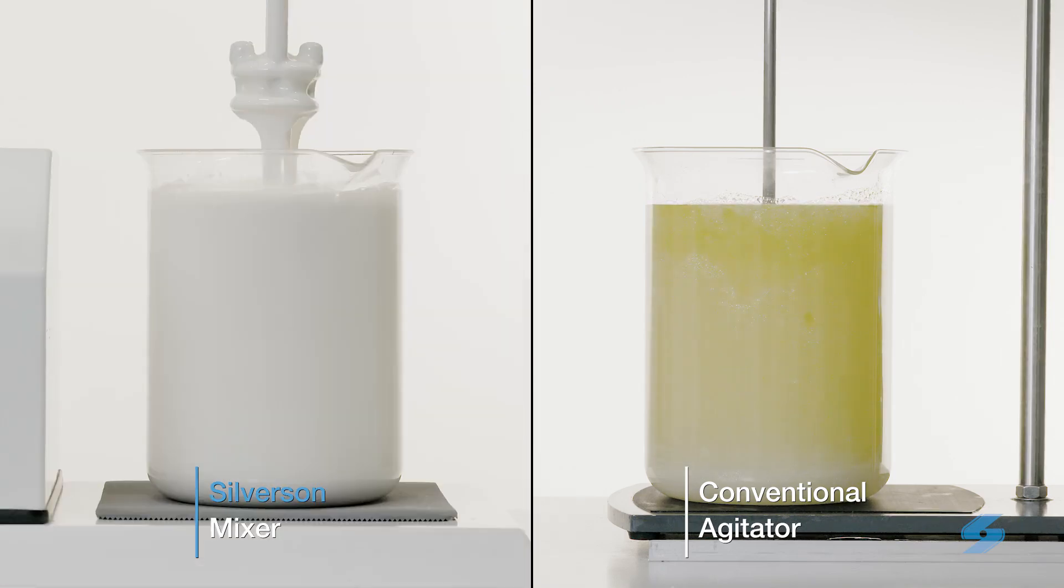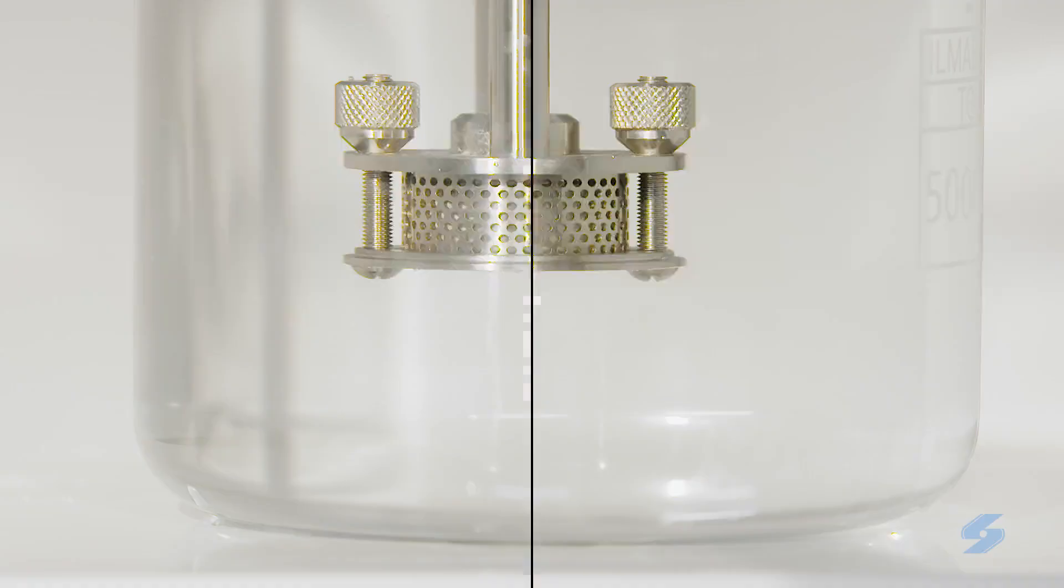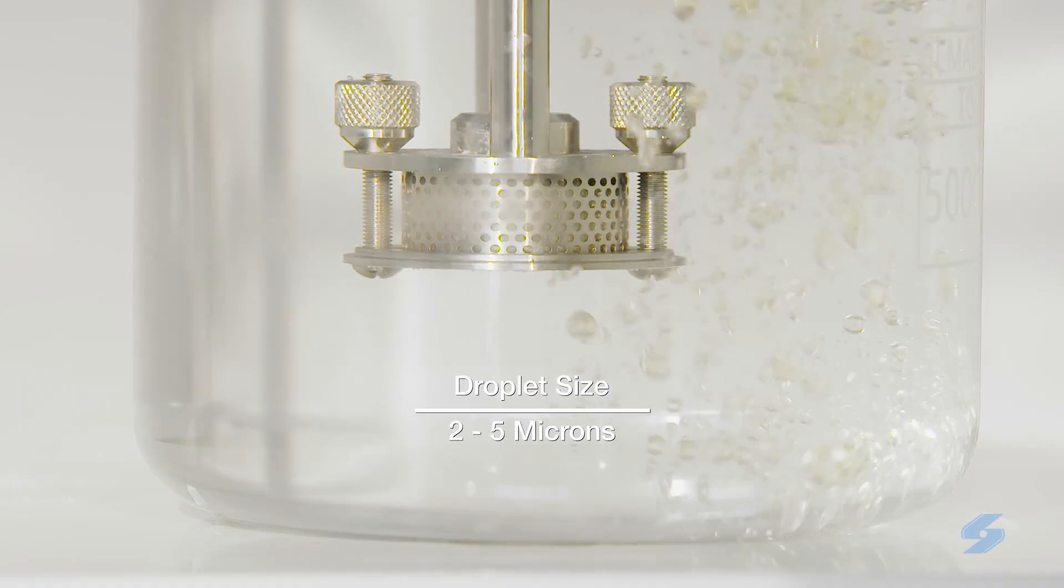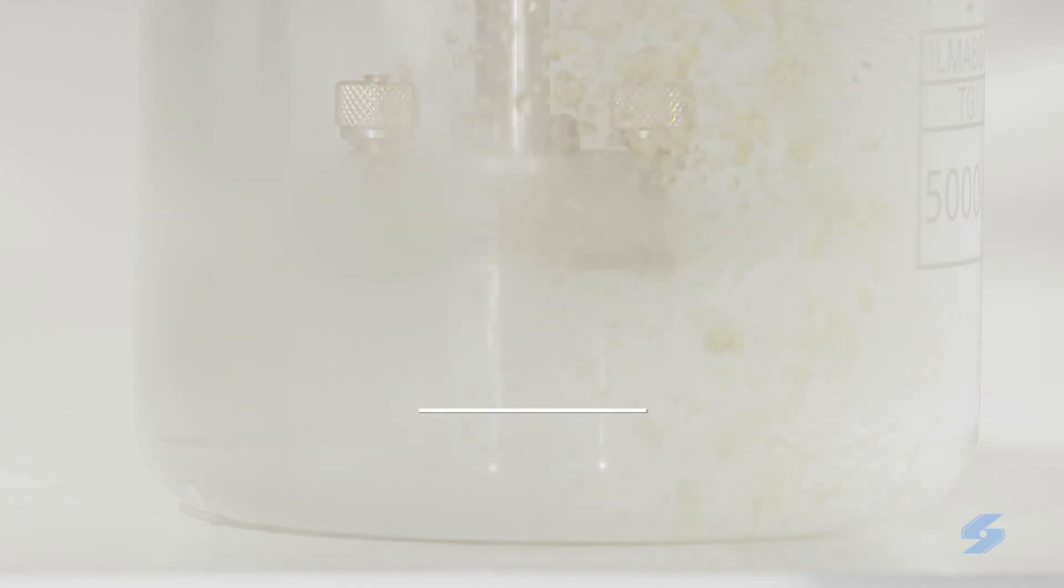A Silverson high-shear mixer produces an almost instantaneous stable emulsion with a typical droplet size of 2 to 5 microns. Finer emulsions down to 0.5 microns can be obtained depending on the formulation.